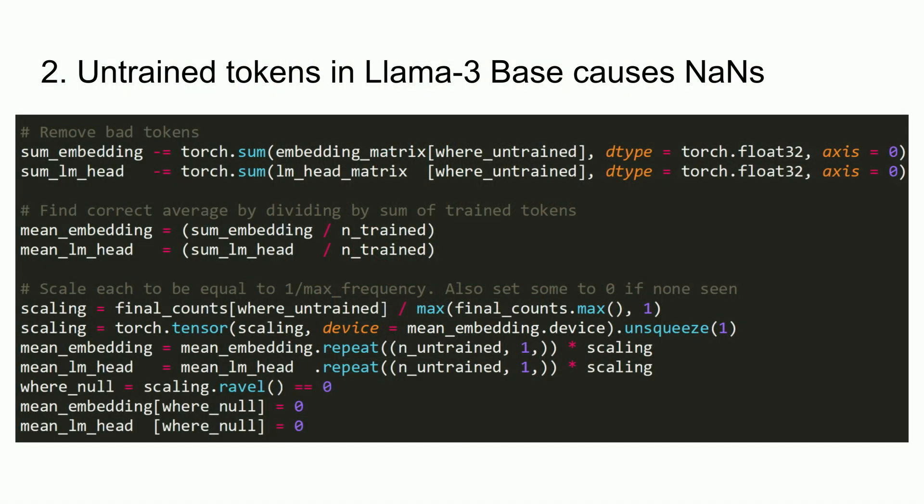To fix untrained tokens, set them to the mean of the entire token embeddings. But be careful: you must remove the untrained tokens from the average first. If you include untrained tokens in the average calculation and divide by the total count including those zeros, your average will be incorrect. You have to mask out the untrained tokens and then take the average.